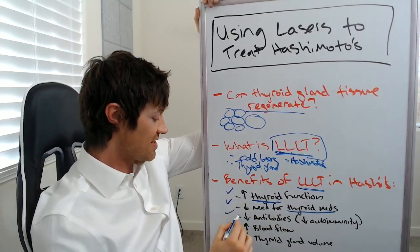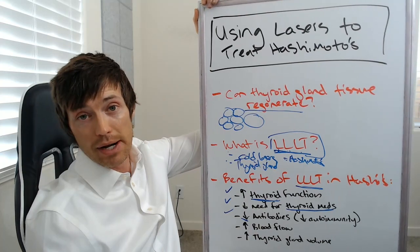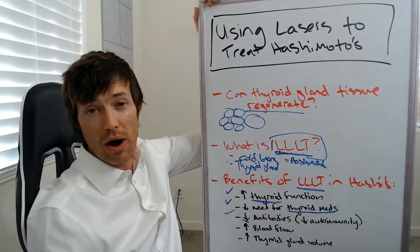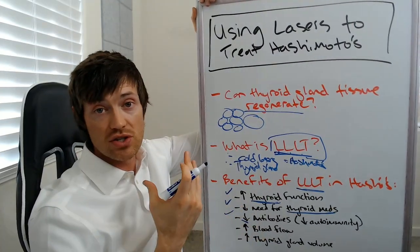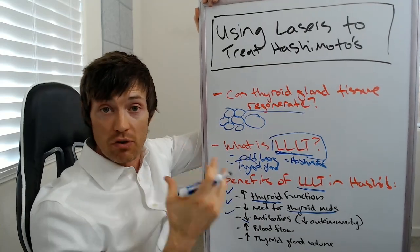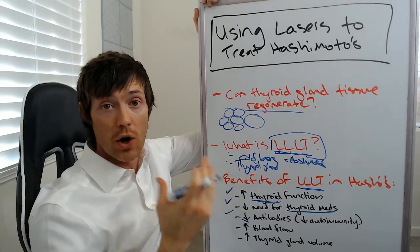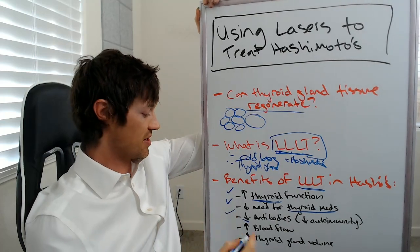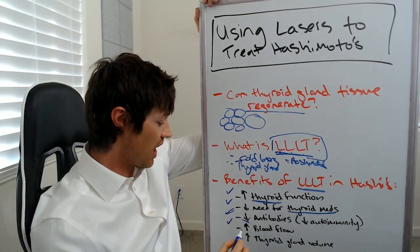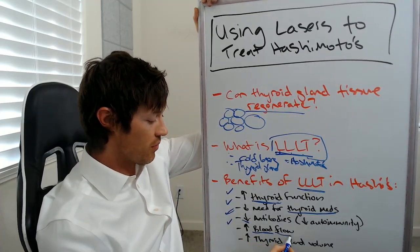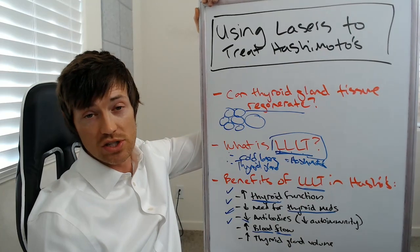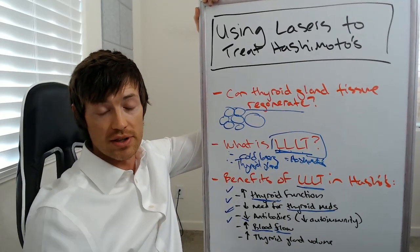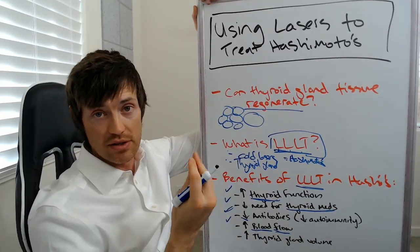The next benefit is that patients see a reduction in antibody levels, which is actually pretty astonishing. This is probably due to the laser reducing inflammation and autoimmune attack inside the thyroid gland cells themselves. Lasers obviously will also increase blood flow — that's one of the reasons I would use them to treat peripheral neuropathy. In a lot of patients who have neuropathy in their legs, numbness and tingling like in diabetes, much of this is due to not enough nutrients getting down into those nerves.